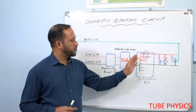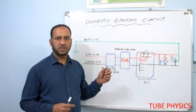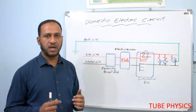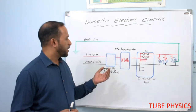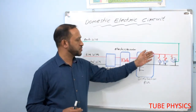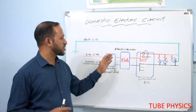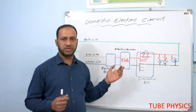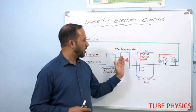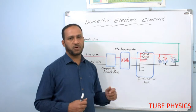The current that we are consuming in our building will be completely passing through the electricity meter, which reads the units of electricity — that is in kilowatt hours — that we consume. By checking that reading, we get our electricity bill. After the electricity meter, we have to take the live wire and neutral wire to the main distribution box.